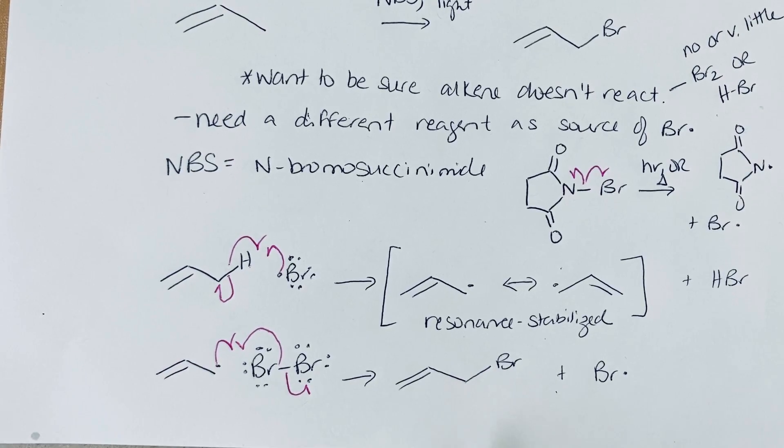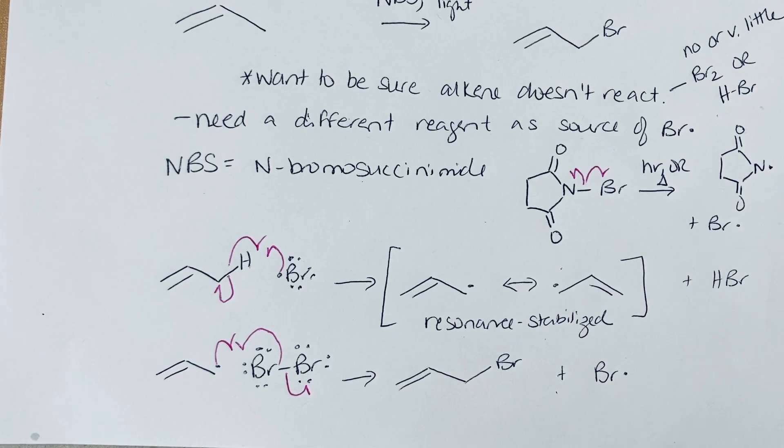This reaction works well if you've got something nice and symmetrical. Notice if either one of these two resonance structures were to react, you would get the same allylic bromide as the product.